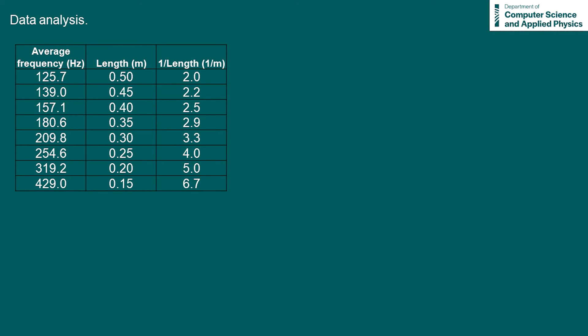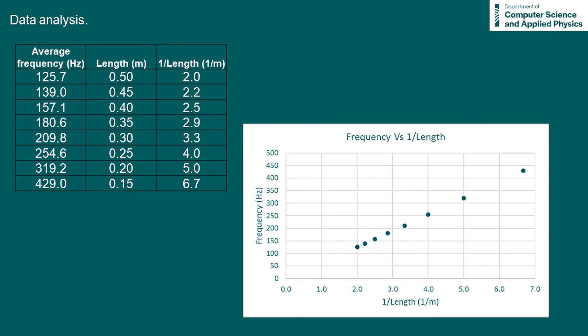Here we have the average frequency values and their corresponding lengths. Remember that we want to plot f versus one over L, so I've also calculated the one over L values. Now we can plot our data points.